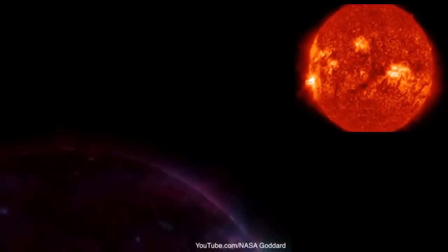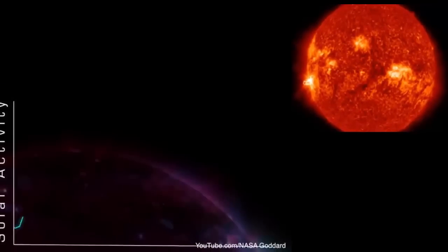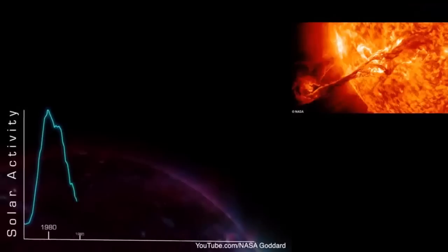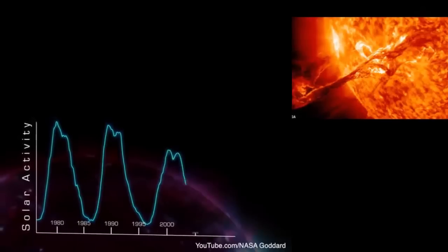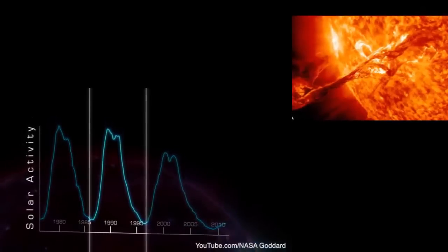In addition to these abrupt changes in activity, the Sun also has a long-term, more regular pattern of change. This pattern is called the sunspot cycle, and a single cycle lasts for about 11 years, although it can be as short as 8 or as long as 14, and it can vary dramatically in intensity.